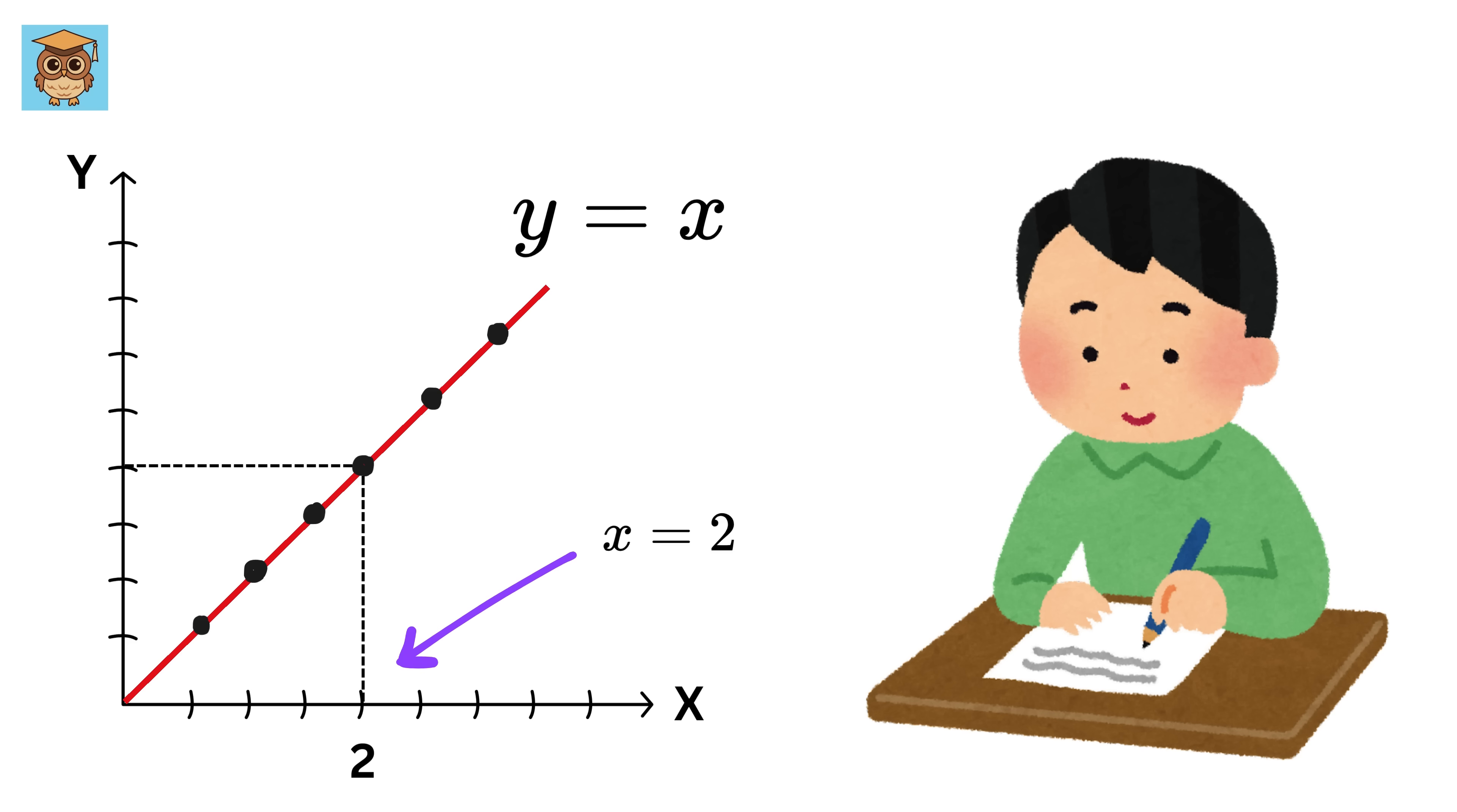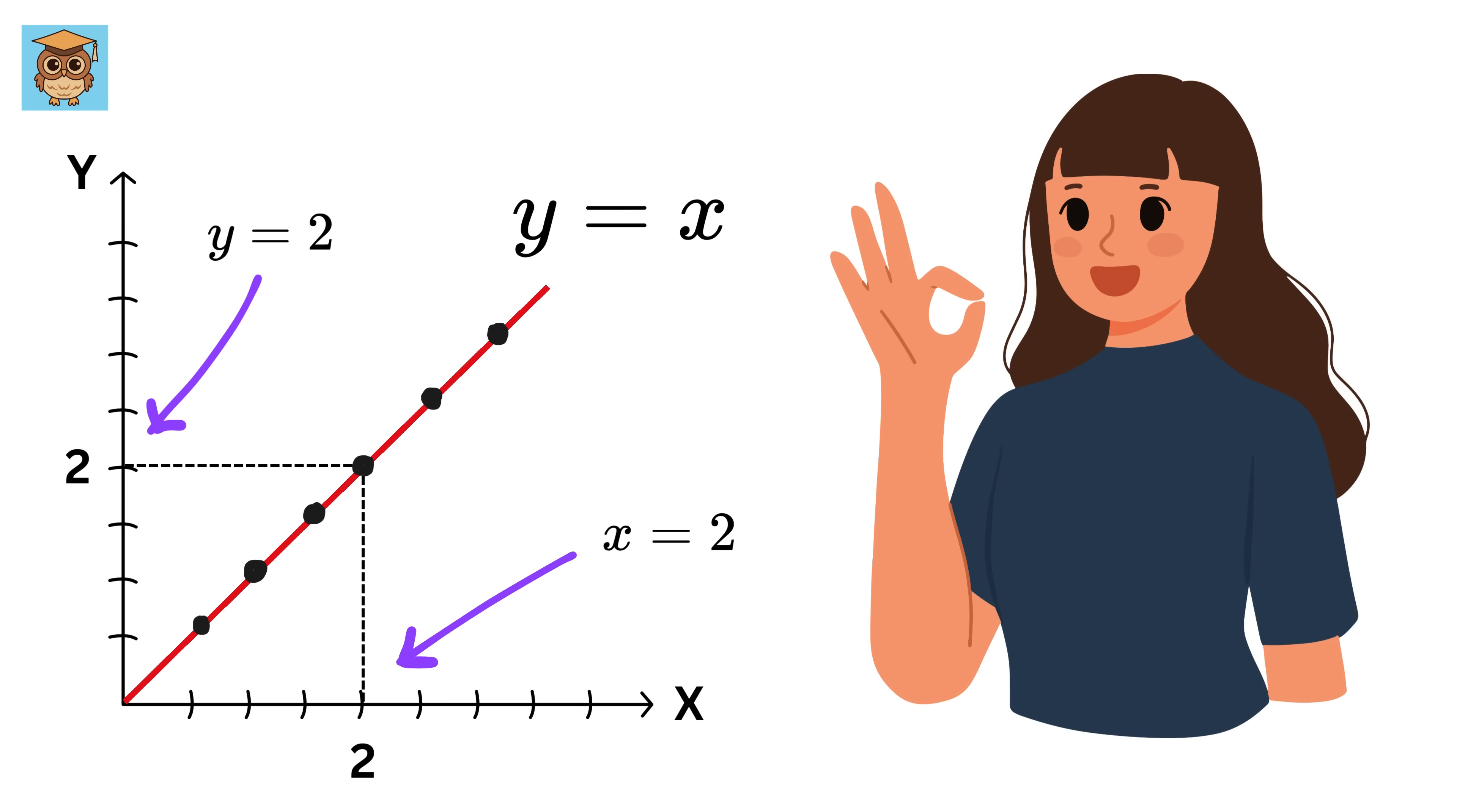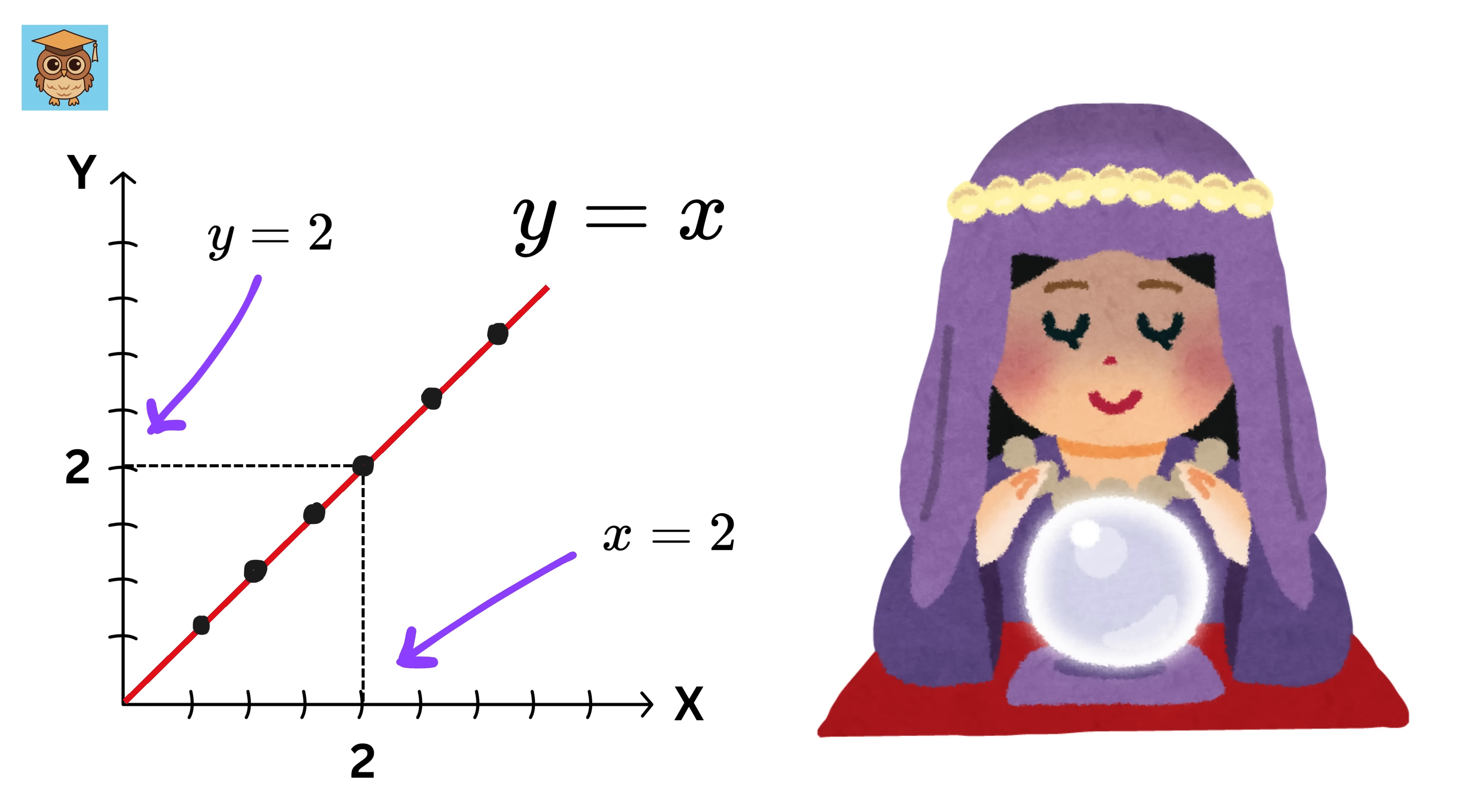We write it something like y equals x, where if we have this line, then at every point on the line, the value of y depends on the value of x. For example, if x equals 2, then y equals 2. This relationship shows how y changes as x changes. But this kind of relationship is easy to visualize because it's a straight line, constant and predictable.